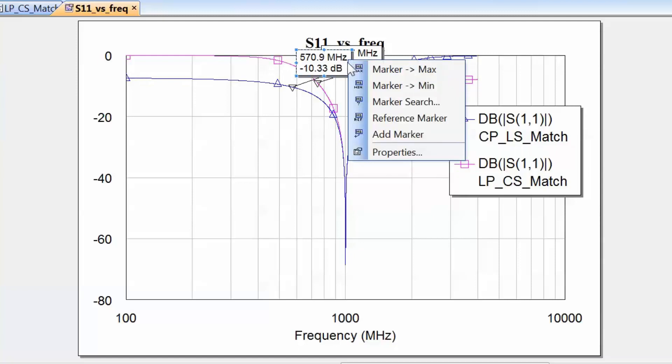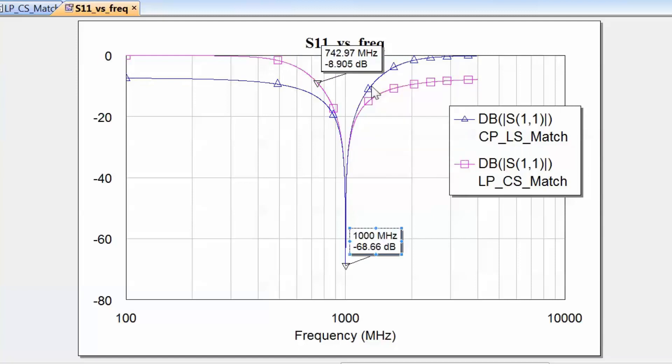We can then right click on each marker and send it to the minimum value, so we can see exactly how low down they go. Both markers go down to more or less the same values. So in terms of the match at the frequency of interest, we've got similar performance. But at lower frequencies we have a better match when we use the capacitor in parallel and the inductor in series, whereas at higher frequencies we get a better match when we use the inductor in parallel and the capacitor in series.